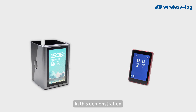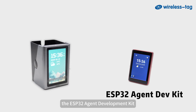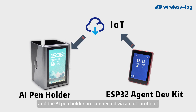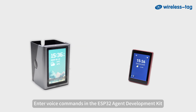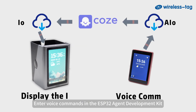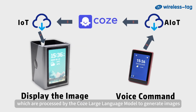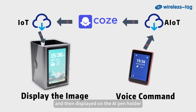In this demonstration, the ESP32 agent development kit and the AI pen holder are connected via an IoT protocol. Enter voice commands in the ESP32 agent development kit, which are processed by the COS large language model to generate images, and then displayed on the AI pen holder.